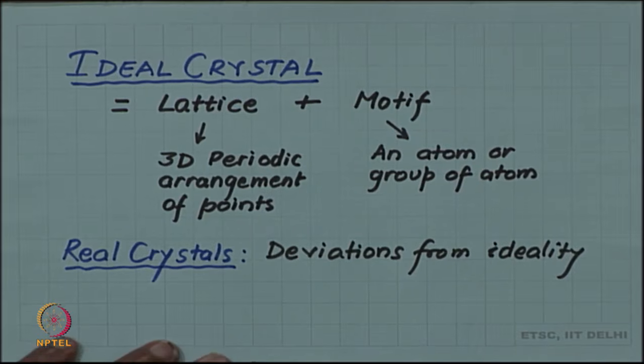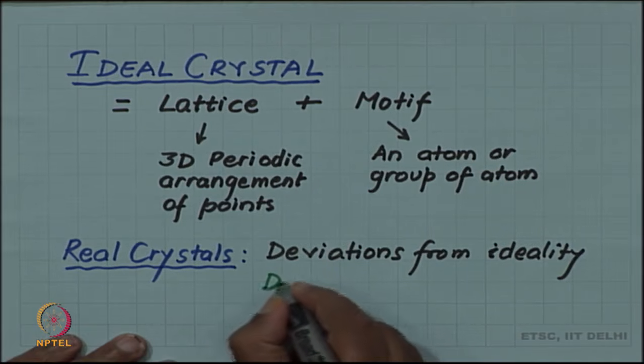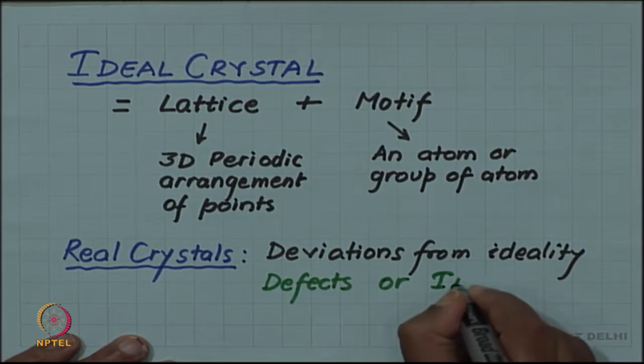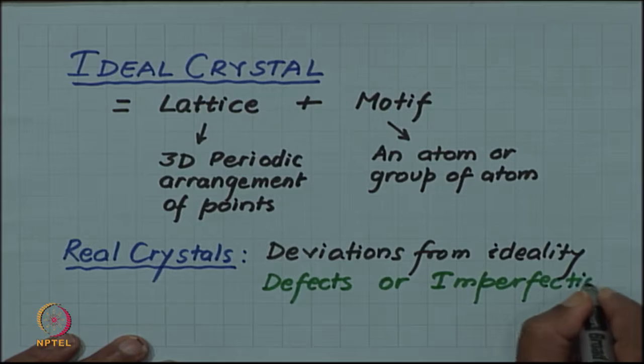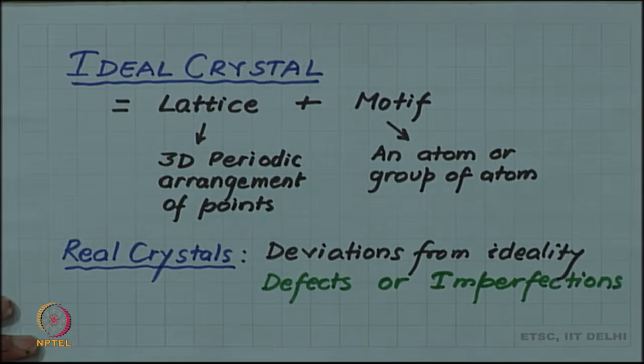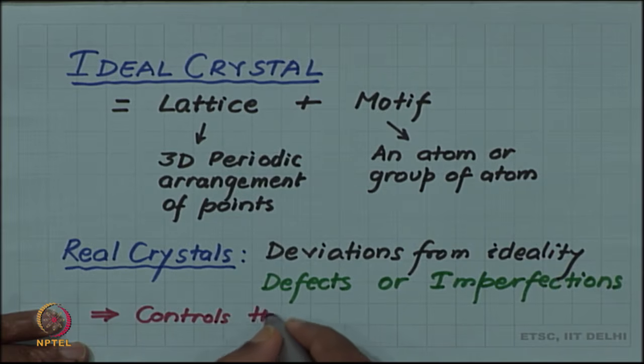These deviations are what are termed as defects or imperfections. They are a very important topic in material science because these defects or imperfections control the properties of material. They are very important in controlling both physical and mechanical properties.